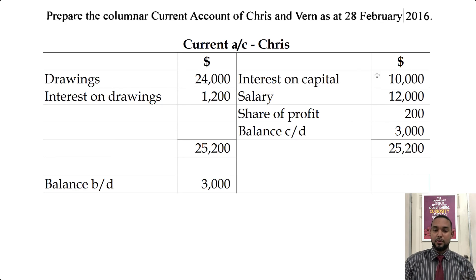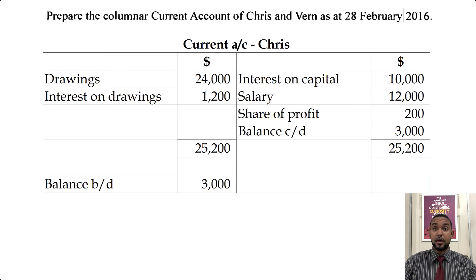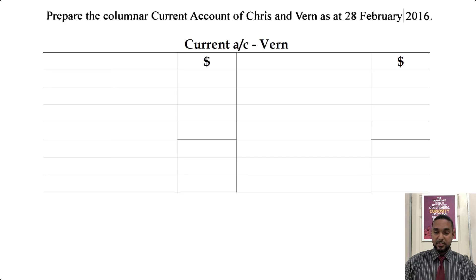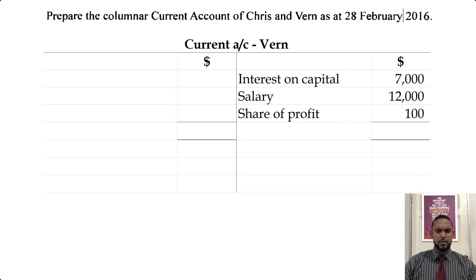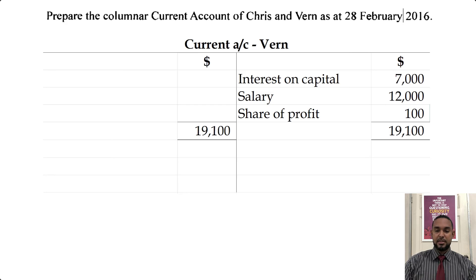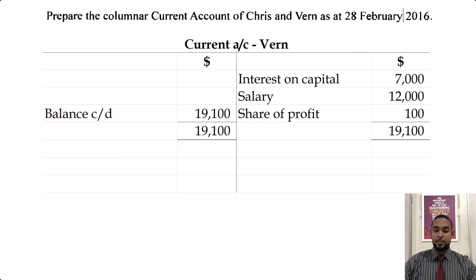For Verne's current account, Verne has the same earnings structure: interest on capital of $7,000, salary of $12,000, and a share of profit of $100. Verne had no drawings and hence no interest on drawings. The balance in Verne's account would be carried down from the debit side and brought down on the credit side — a credit balance, meaning Verne is in surplus.